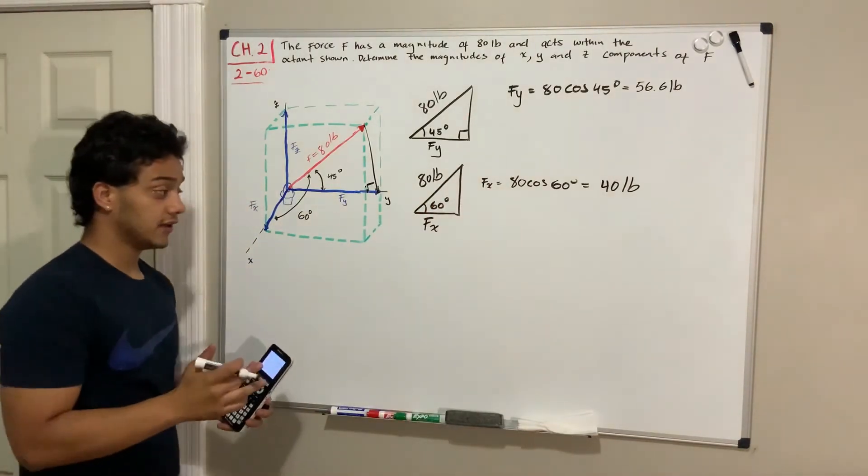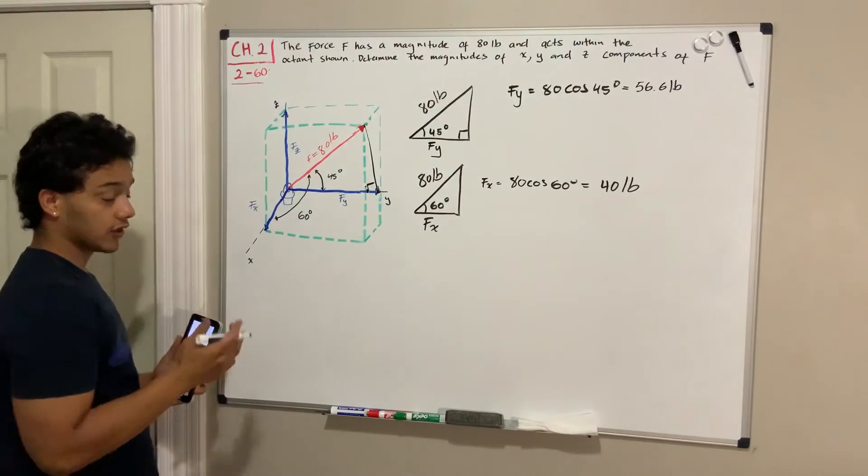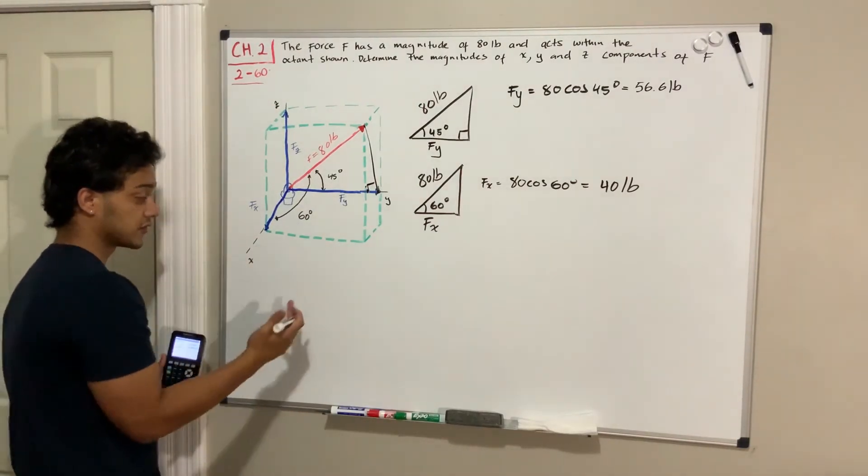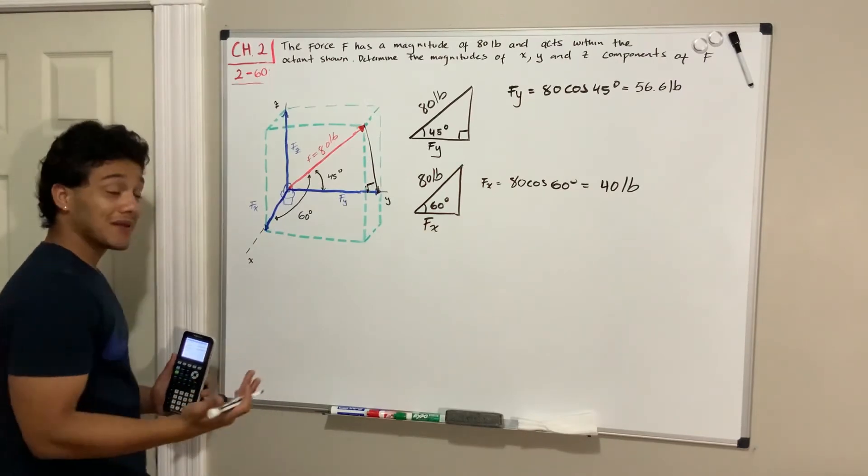So we figured out the Y and the X component. Now all we need to do is find the Z component. We're going to use the Pythagorean theorem and solve for F of Z.